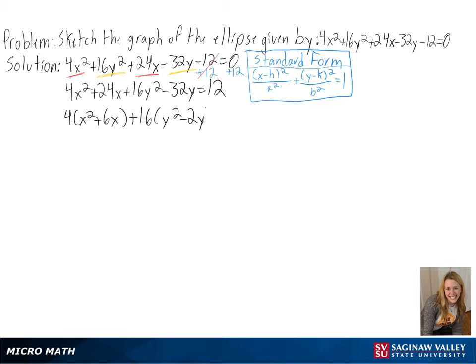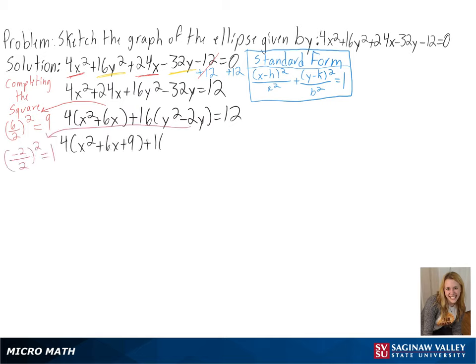To put our equation in standard form, our fractions need to be squared, so we will need to complete the squares. We can do this by taking our 6, dividing it by 2, and squaring it to get 9, and by taking our negative 2, dividing it by 2, and squaring it to get 1.